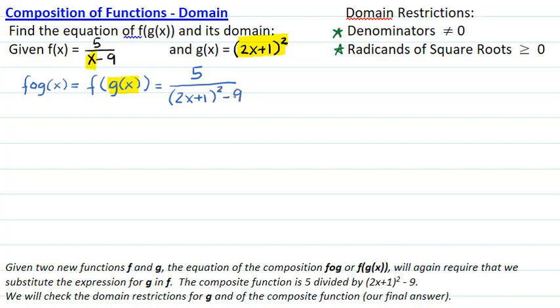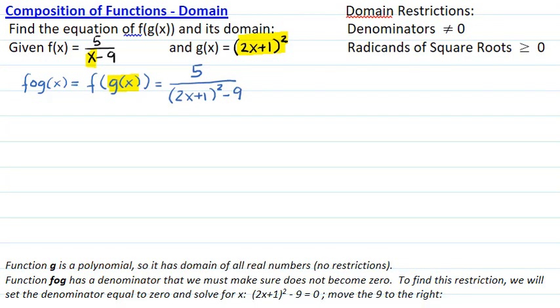We will check the domain restrictions first for g and then for the composite function. Function g is a polynomial and it has no denominator or square roots, so there are no restrictions. The domain of g is all real numbers.